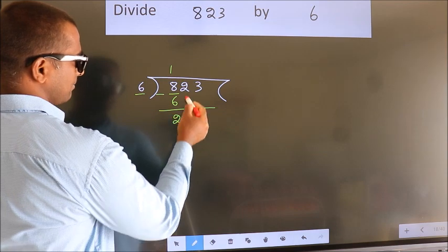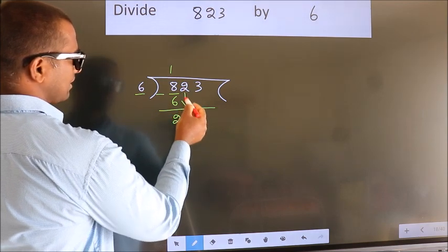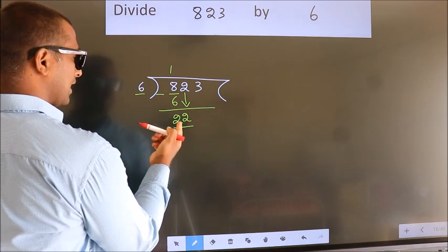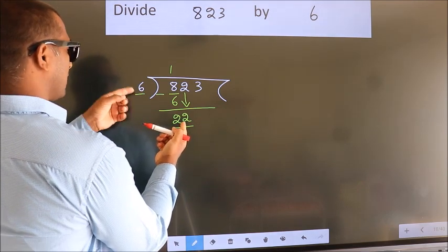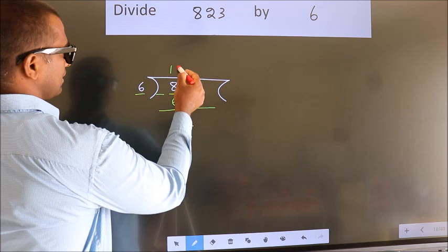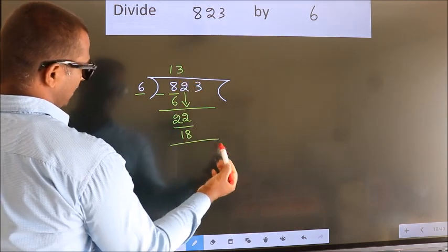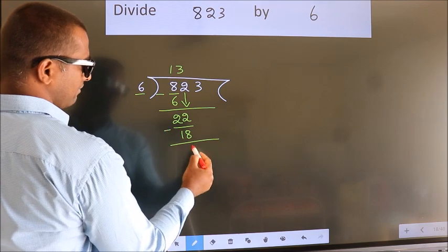After this, bring down the beside number. 2 down. So, 22. A number close to 22 in 6 table is 6 threes, 18. Now we subtract. We get 4.